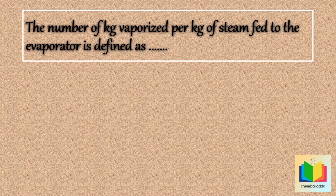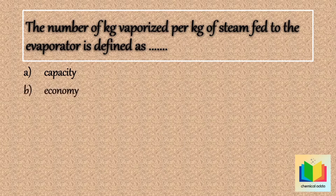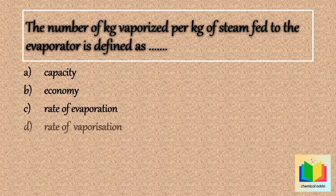Options are: option A, capacity; option B, economy; option C, rate of evaporation; option D, rate of vaporization.